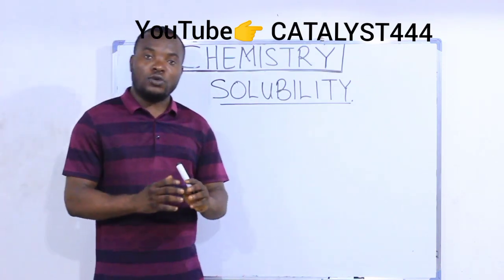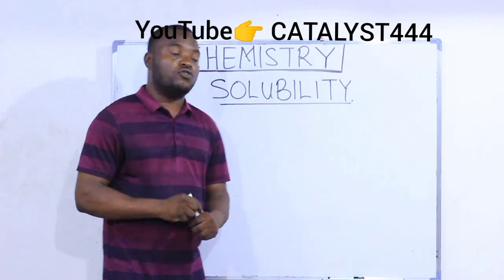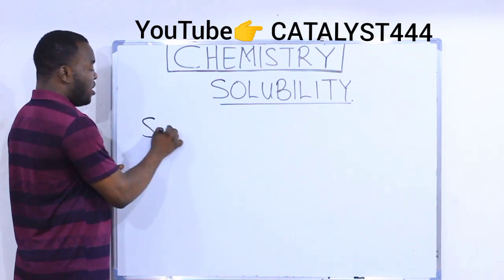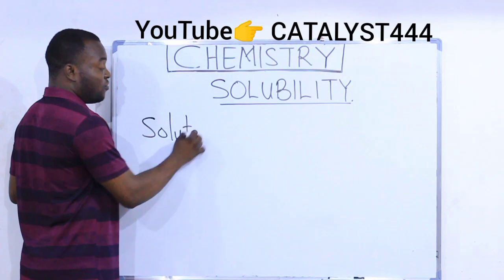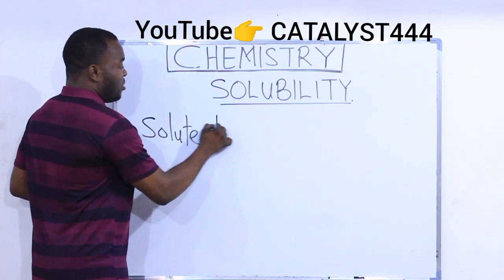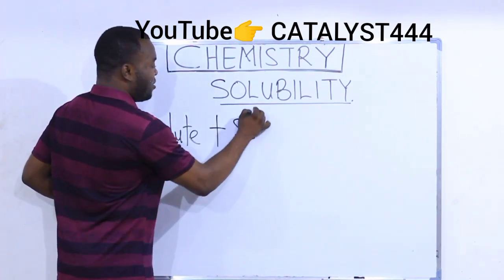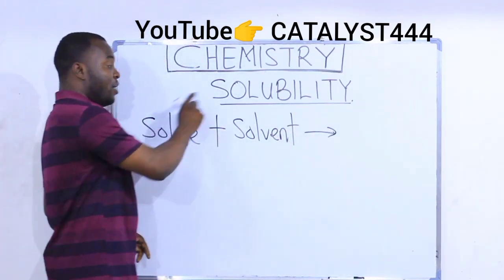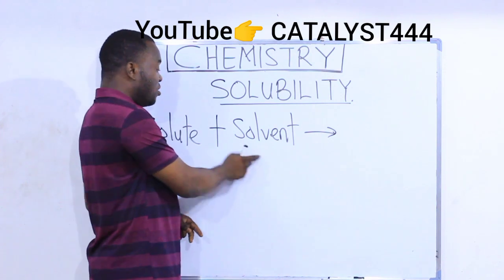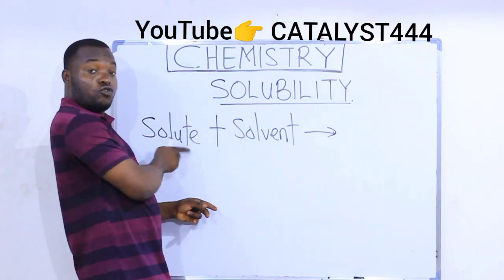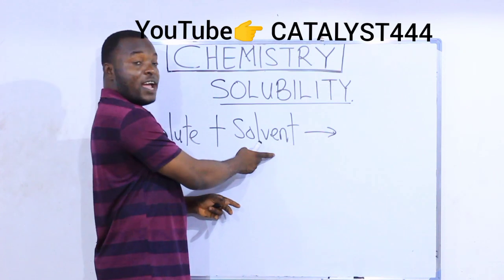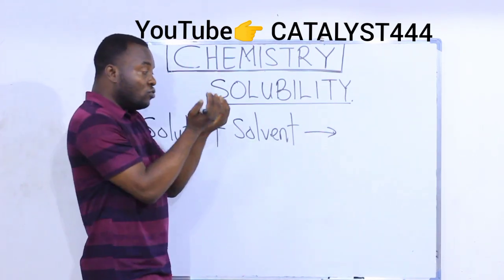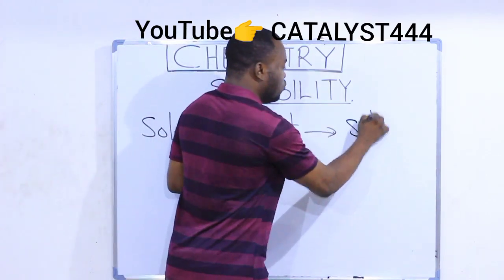Now we want to discuss the types of solutions. What is a solution? A solution is formed when a solute — which is the solid substance — is dissolved inside the solvent. Like when you take a cube of sugar and dissolve it in water: the sugar is the solute while the water is the solvent. When the two mix together and the sugar dissolves, the new thing formed is called a solution.